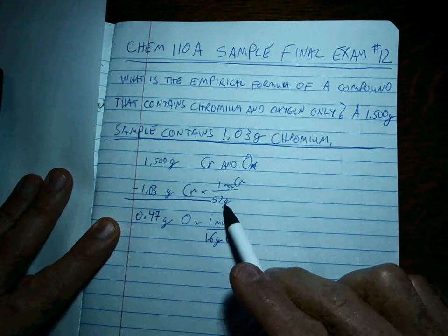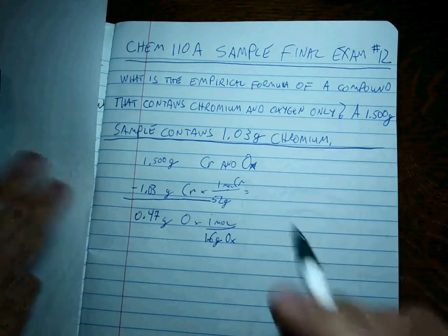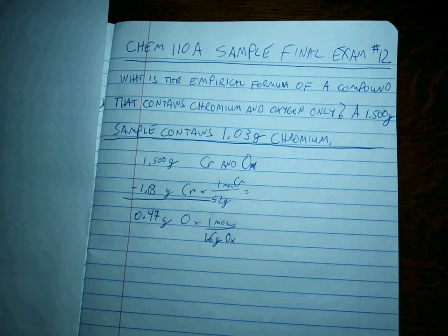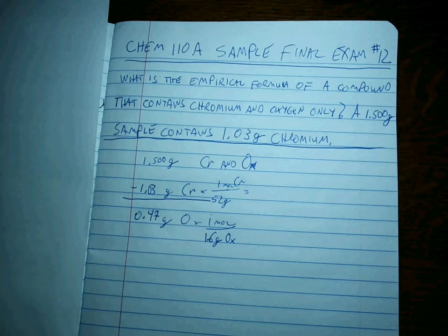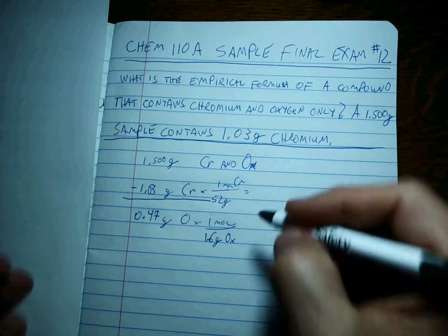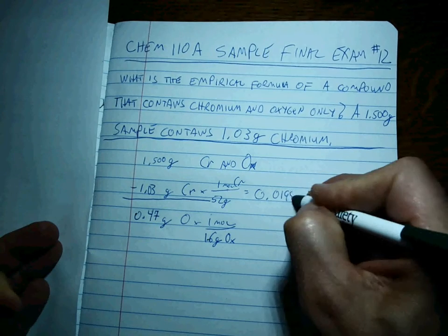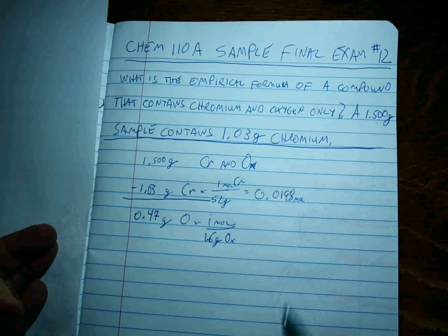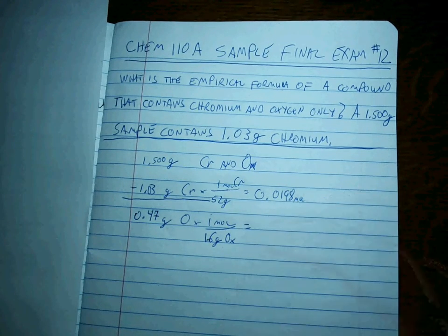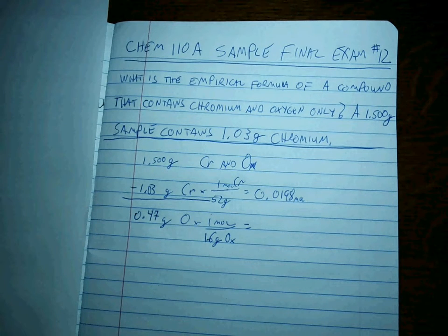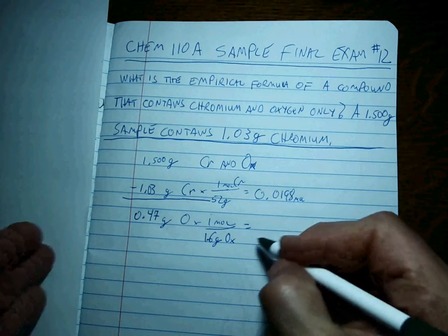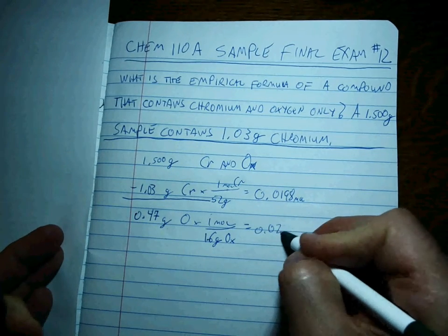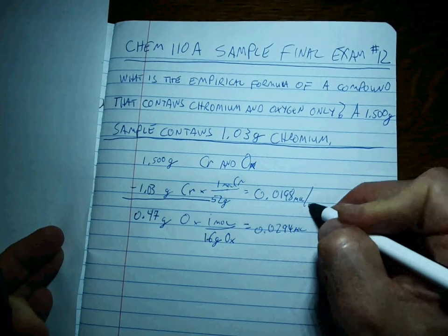So that's where those values come from. We do the calculation: 1.03 divided by 52 gives 0.0198 moles of chromium, and 0.47 divided by 16 gives 0.0294 moles of oxygen.